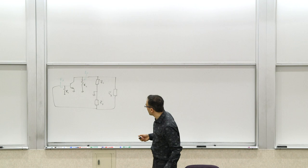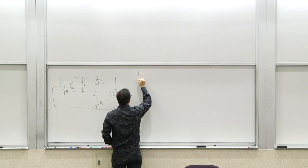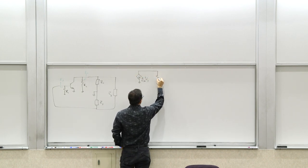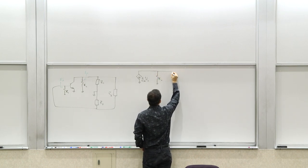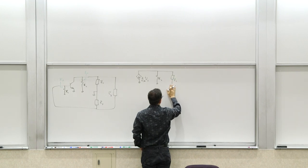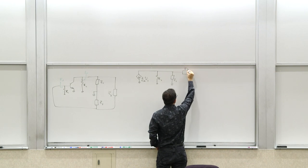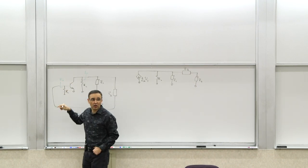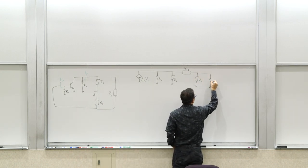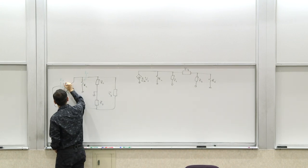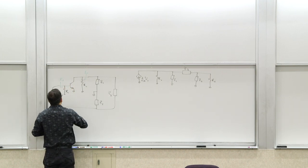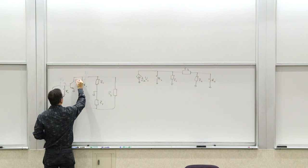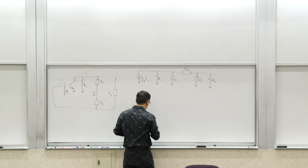If this is a small signal model, we can draw a system with the GM of the transistor — some GM·V1 — and the total output resistance RO. Then you see Z1 to ground, Z3 across, and Z2 to ground. Z2 is in parallel with whatever RI is. This voltage is V1, and GM·V1 is this current.